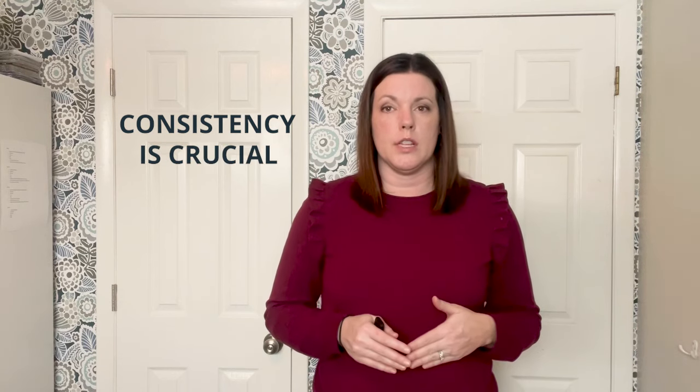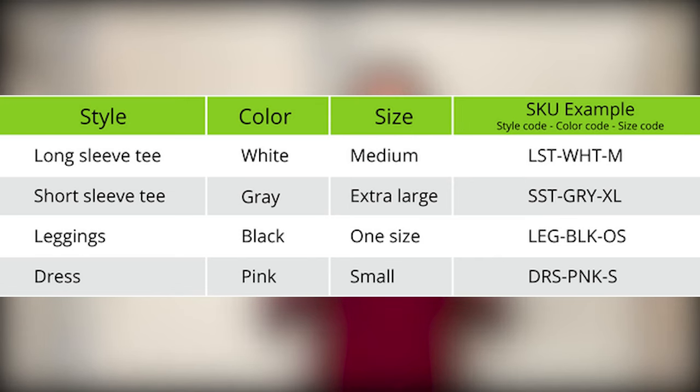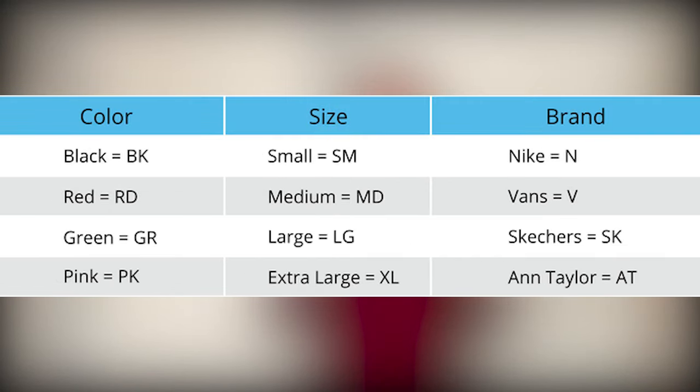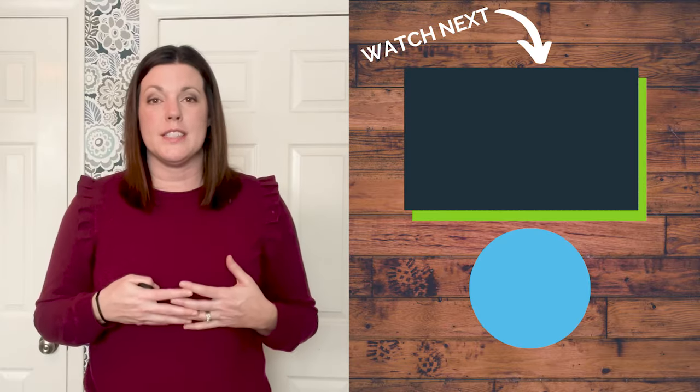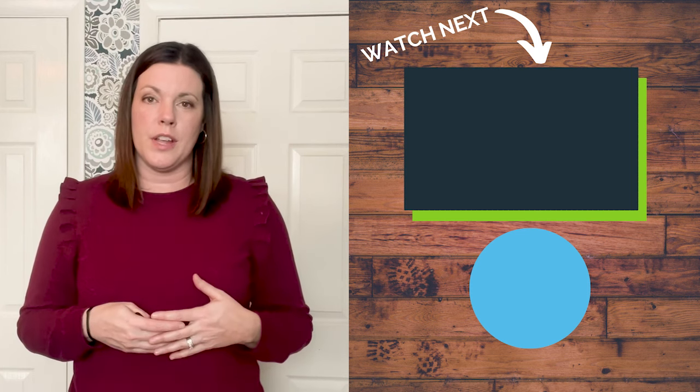Establish a coding system around some of your identifiers. Ask yourself, what makes this product different from my other products? Make a list of all the parameters for all of your products and how you identify various aspects of them. Consistency is crucial in this process. Here are a few examples. Creating these coding systems now will make it much easier for you to scale later as you add more products to your catalog.